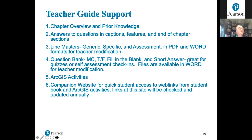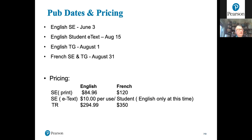Regarding publication dates: the student book is on press now and will be in stock June 3rd. The teacher's guide is in development and will be available August 1st. A student e-text for the English resource will be available August 15th for back to school. The resource is also being produced in French, with both the student book and teacher's guide available at the end of August.